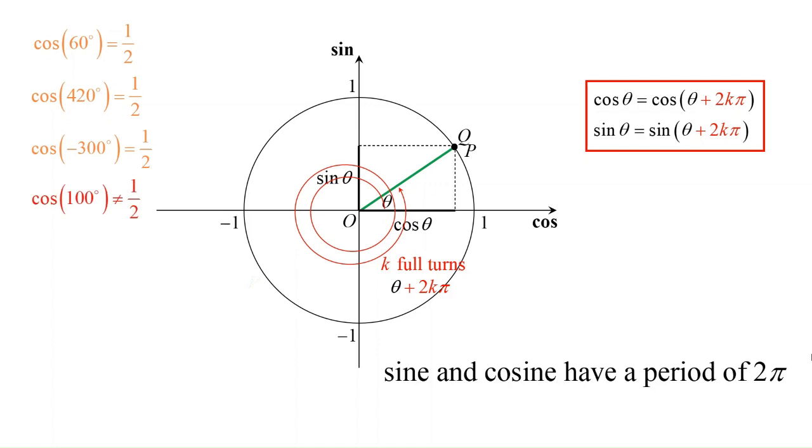However, cosine of 100 degrees is not half as 100 degrees and 60 degrees do not differ by 360 degrees.